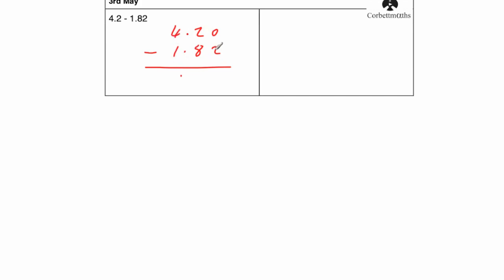Now what we're going to do is subtract. 0 take away 2 we can't do, so we're going to borrow, let's call that 1, carry 1 over. 10 take away 2 is 8. 1 take away 8 we can't do, so again borrow from the units and call that 11. 11 take away 8 equals 3, and 3 take away 1 equals 2. So 4.2 take away 1.82 equals 2.38.